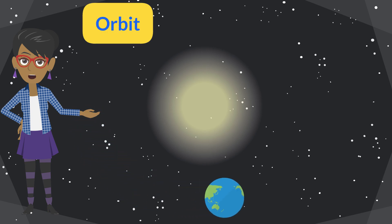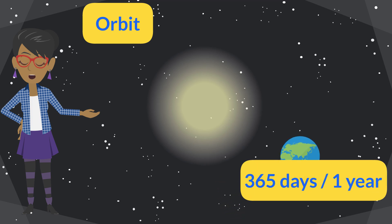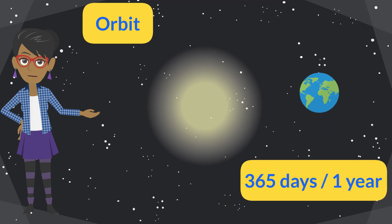The Earth's path around the Sun is called its orbit. It takes the Earth 365 days, or one year, to orbit the Sun.